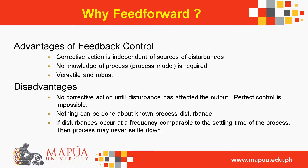Advantages of feedback control: corrective action is independent of sources of disturbances, and no knowledge of the process is required — it is versatile and robust. Disadvantages: no corrective action until the disturbance has affected the output, perfect control is impossible, nothing can be done about known process disturbances, and if disturbances occur at a frequency comparable to the settling time of the process, the process may never settle down.